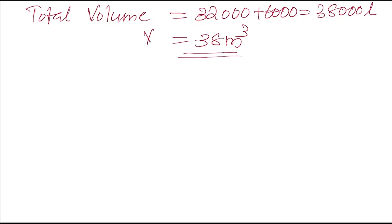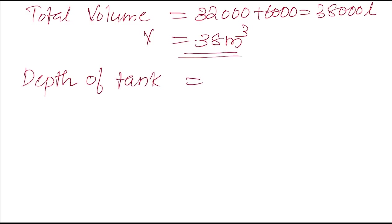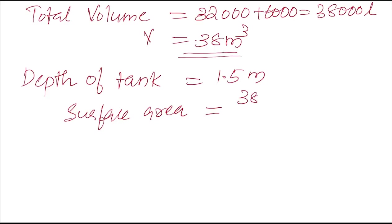According to this total volume, we need to fix the dimensions of the tank. Since depth or height is not mentioned in the question, we assume the depth of the tank as 1.5 meters (it can be assumed between 1 to 1.5 meters). Knowing the depth, we can calculate the surface area: surface area = total volume ÷ depth = 38 ÷ 1.5 = 25.33 square meters.